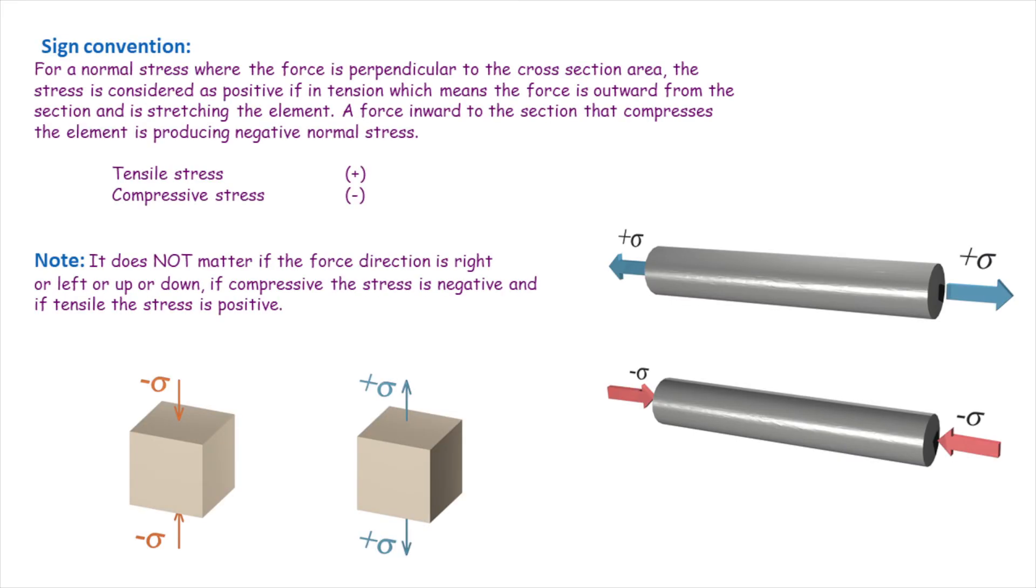When determining sign of normal stress, it doesn't matter if the force direction is right or left or up or down. If the force is compressive, it is producing negative stress. And if the force is tensile, it is producing positive stress.